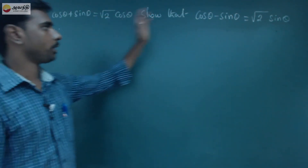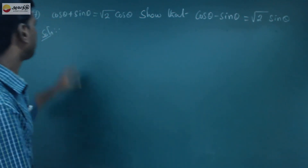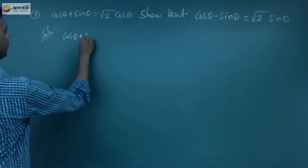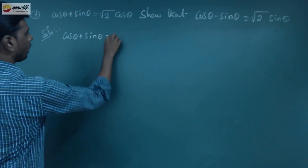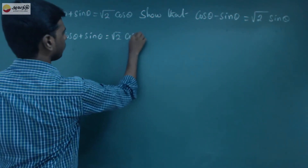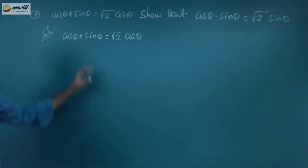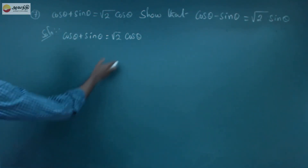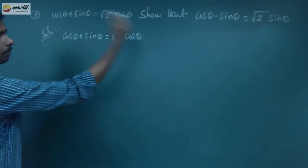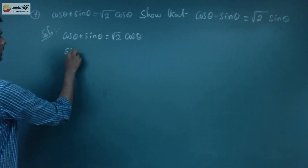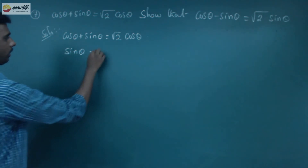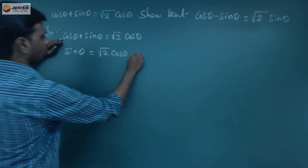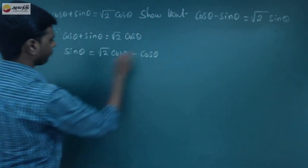How does this concept come? First, we will write that cosθ plus sinθ equals square root of 2 into cosθ. We will prove this. Here, root 2 cosθ and cosθ: that gives sinθ equal to root 2 cosθ minus cosθ.